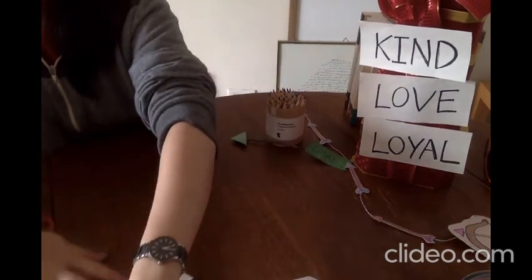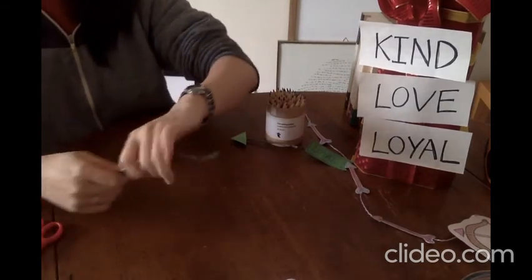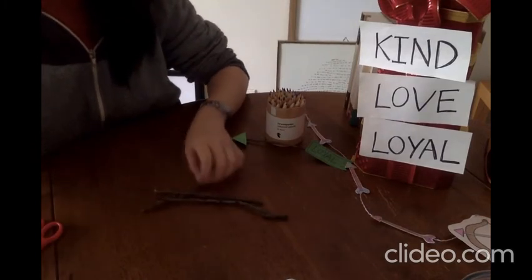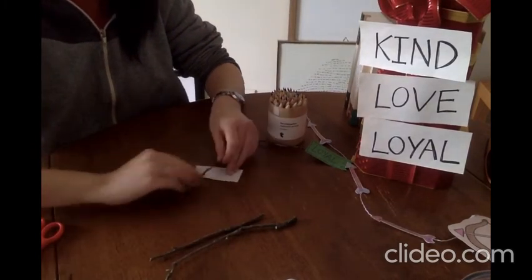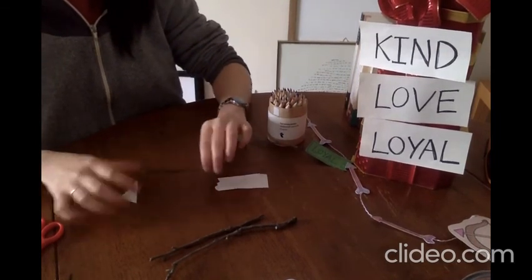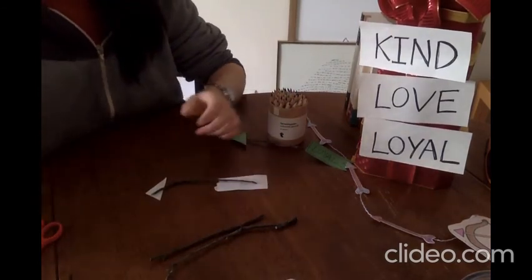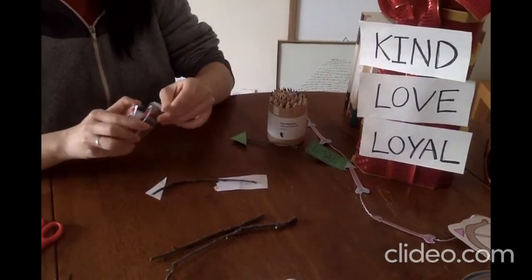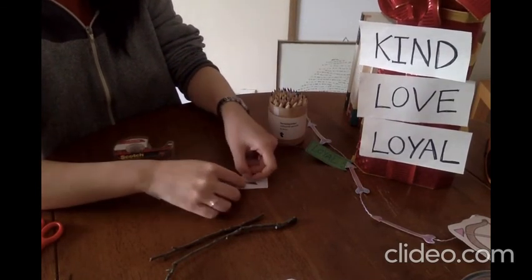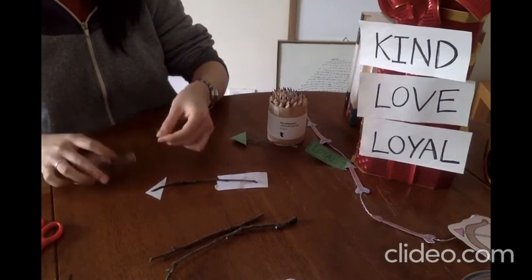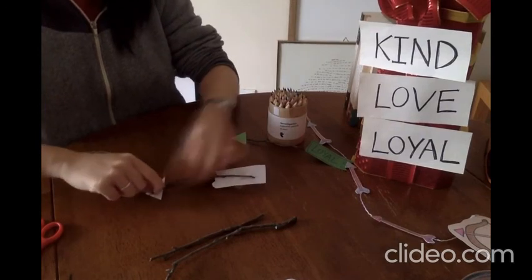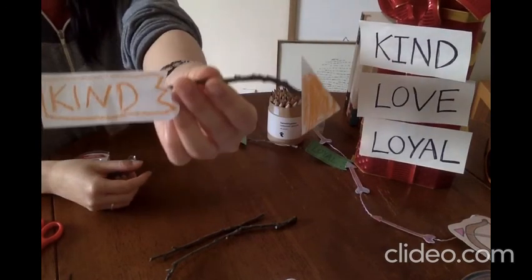Now, to assemble your arrows, you need your sticks and the papers that you have cut. To assemble them, all you need to do is tape the tip and the tail to your stick with some tape. And again, get some help if you need it. Tape it. Like that. And you should get an arrow like this.